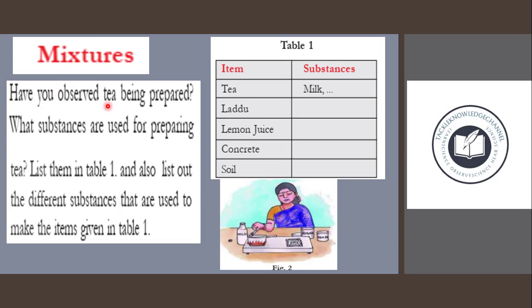Mixtures. Have you observed tea being prepared? What substances are used for preparing tea? List them in Table 1 and also list out the different substances used to make the other items given in Table 1. The first item is tea, and the substances used to prepare it are milk, tea powder, and sugar.